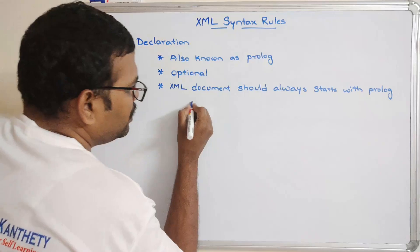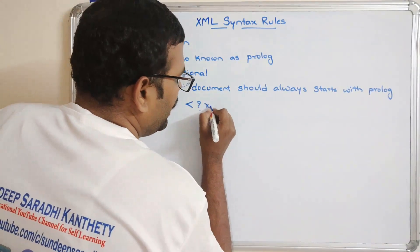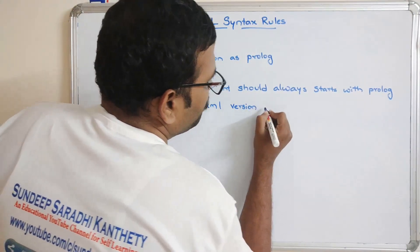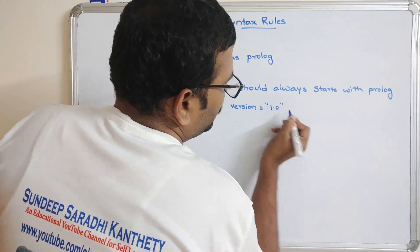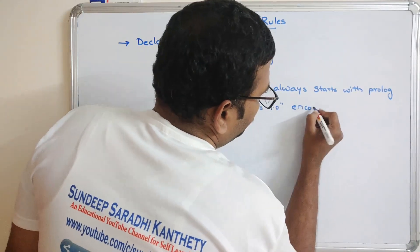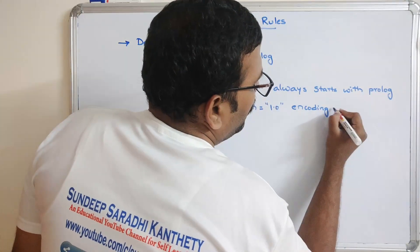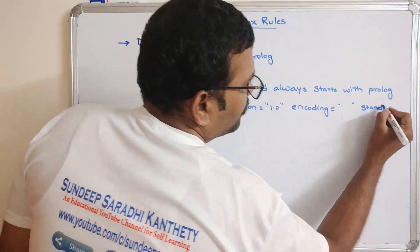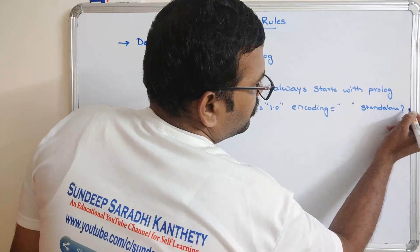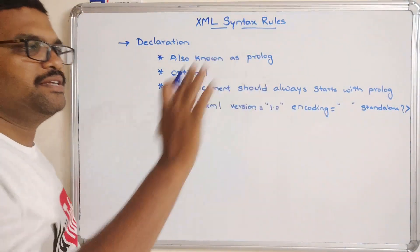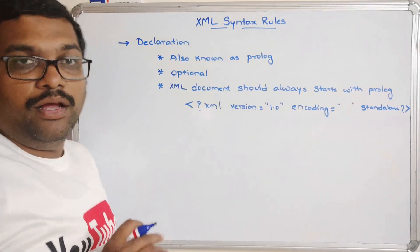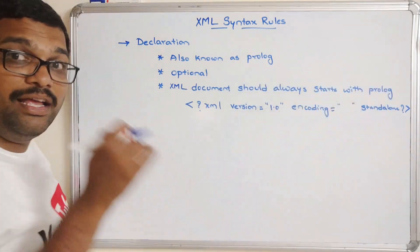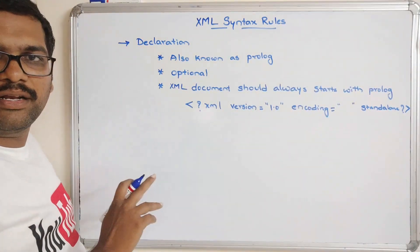The prologue is a declaration, and it will be in the format: question mark XML, then the version attribute — version 1.0 or similar — then the encoding format, and standalone regarding the DTD. This is the syntax for the declaration. The main rule is that if the user wants to include the declaration, the XML document should always start with the prologue, and this is completely optional.